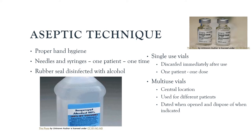Single-use vials are for one patient — you discard them immediately after use. As soon as you draw the medicine you need, get the vial into the sharps disposal. Even if there is medication left in the vial, it is not reused. Multi-use vials, such as insulin vials, are kept in a central location and should not go into patient rooms since they're used for different patients. As soon as they are opened, you date them and dispose of them accordingly, because every medication once opened has a certain number of days before it must be discarded once the seal is broken.